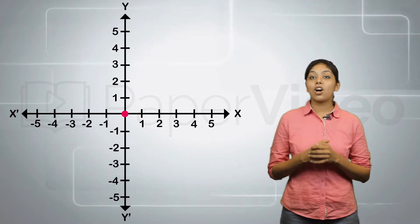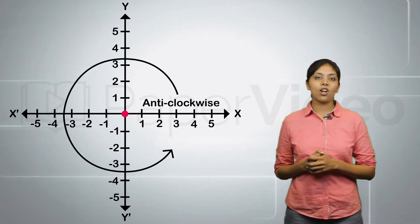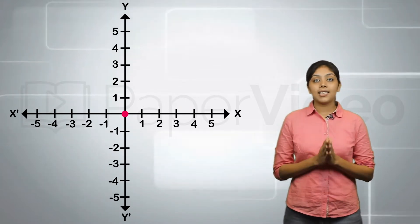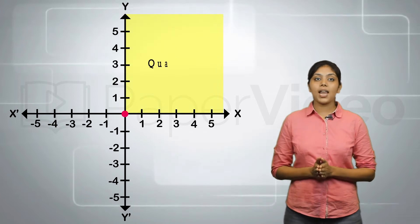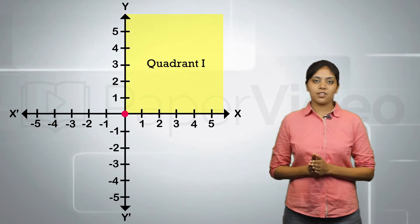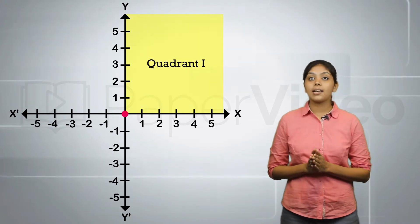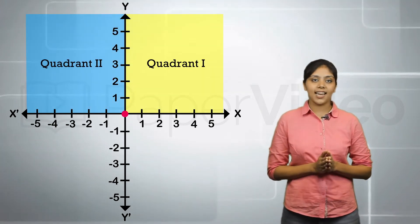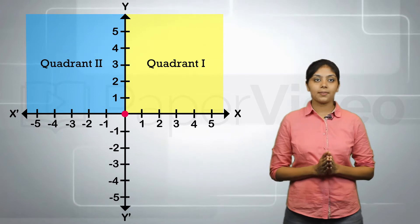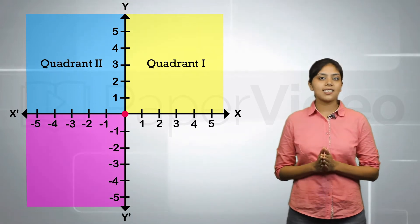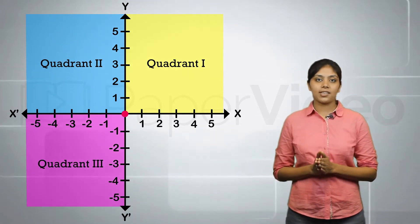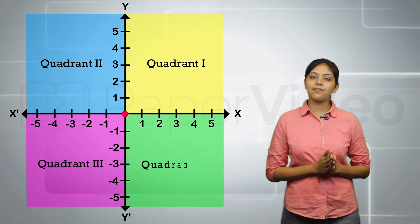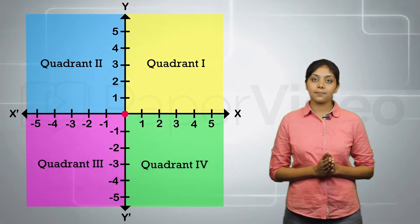The quadrants are numbered in the anti-clockwise direction. This part is known as the first quadrant. This part is known as the second quadrant. This is the third quadrant. And this part is the fourth quadrant.